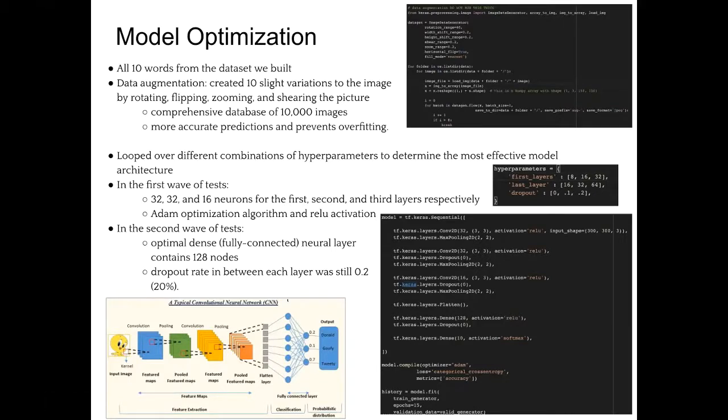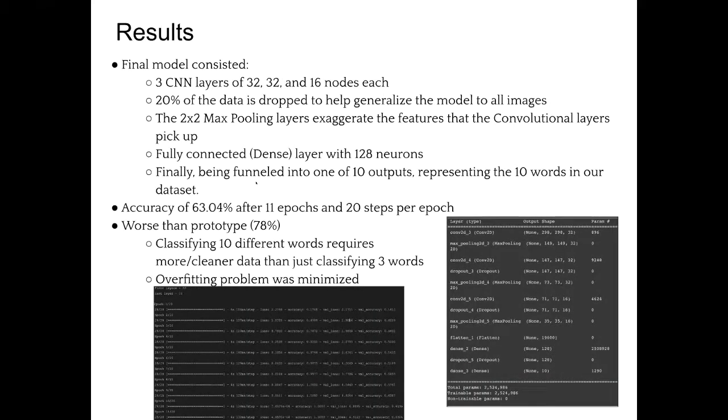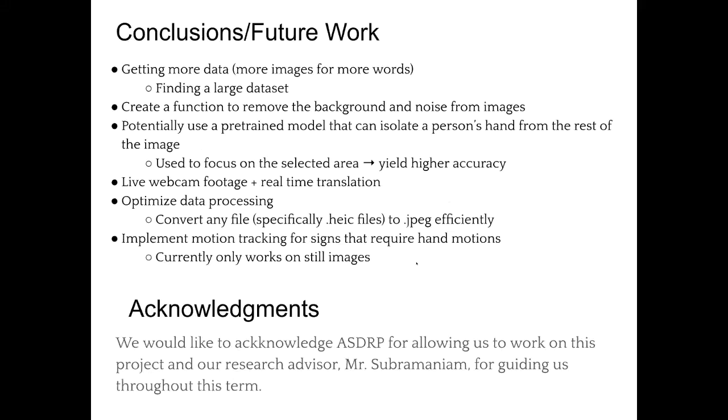And then the last layer, which is the dense or fully connected one, finally takes that output and then gives us a result of one of 10 of the words that we've selected in our dataset. So again, we also had a 2x2 max pooling layers, and you can see our results here. This is the final model that we were able to come up with. And the 2x2 max pooling layers, what they do is they take each of the convolutional layers and they exaggerate the filters, and that way the model can actually pick up the different lines and hand motions that the image is making, and then finally connect that to one of the 10 words. So the accuracy we had for the final model was 63% after 11 epochs, and this is worse than the initial prototype of 78%, but that's for a few reasons. One being it was classifying 10 different words, which is requiring a lot more data than just the initial three words that we tested our prototype on. But the good thing is the overfitting problem was significantly minimized, so it's better to scale up and we intend on next term getting more data so we can get more accurate predictions. And now I'll pass it on for conclusions.